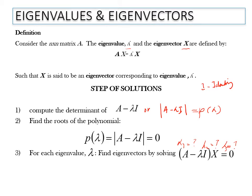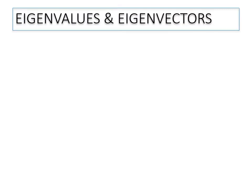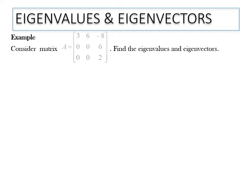Now we will look at Example 1: find the eigenvalues and eigenvectors of matrix A, which is a 3 by 3 matrix. First, we need to write A minus lambda I and find the determinant.